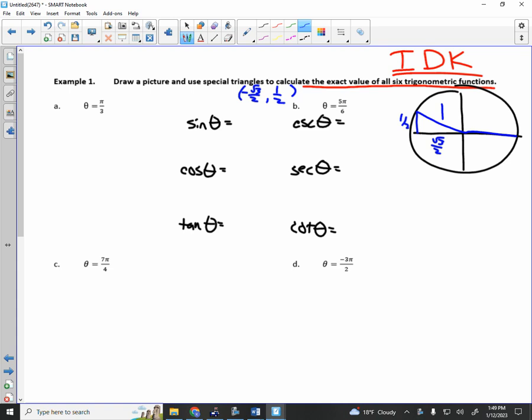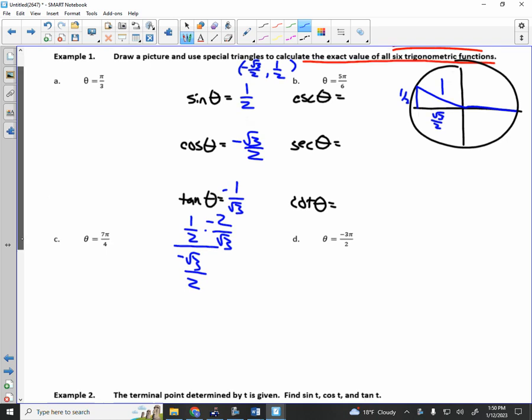What's the sine value? 1 half. What's the cosine value? Negative root of 3 over 2. That was easy, right? And we'll do tangent. Tangent, I have to take the y value, which is 1 half, and divide it by negative root of 3 over 2. So I'm going to multiply by the reciprocal. Negative 2 over the root of 3. And what do you get? Negative 1 over the root of 3.